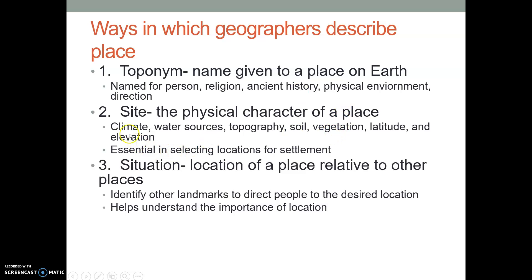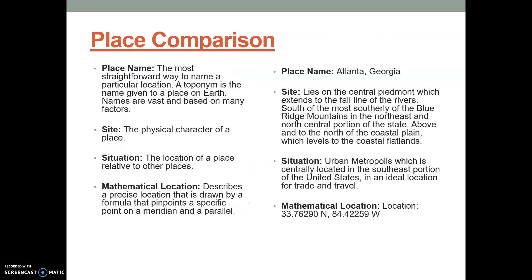Site is what we've just been doing — when you're describing place, what is it like? Those physical and cultural characteristics you're describing make up its site. And situation, which we talked about last time, is relative location. These three things combined — toponym, site, and situation — give us a very accurate representation of what place actually is.